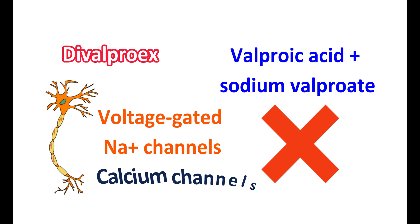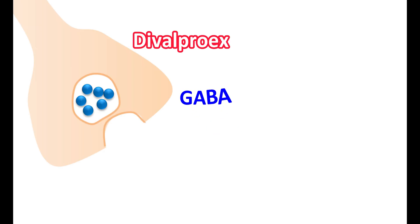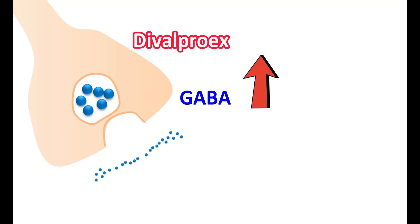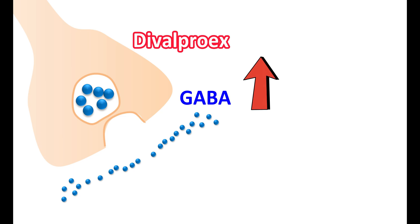Divalproex can also block some calcium channels that are involved in neurotransmitter release. Another important action is to increase the action of GABA, an inhibitory neurotransmitter in the CNS that controls the excitatory response. Divalproex increases GABA action by acting on GABA receptors like an agonist and can also increase GABA release. By all these actions, it increases the inhibitory response, thereby controlling neuronal excitation.